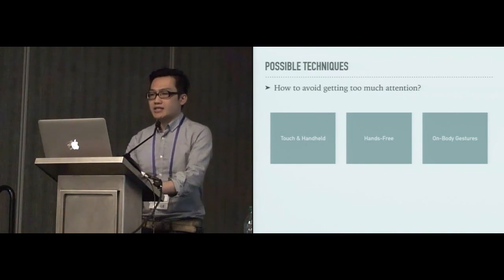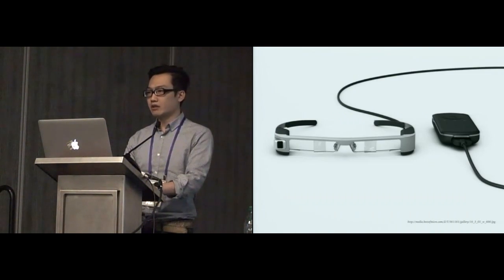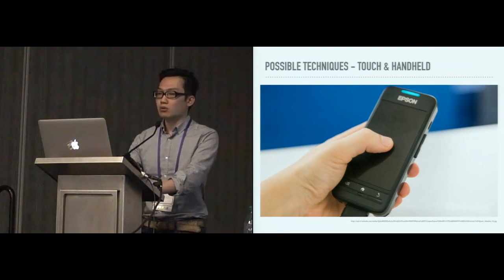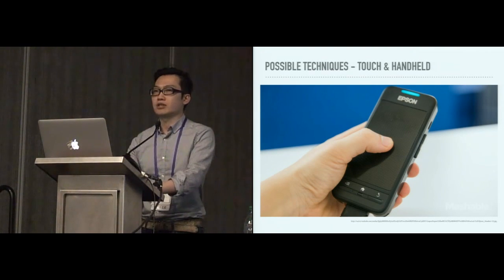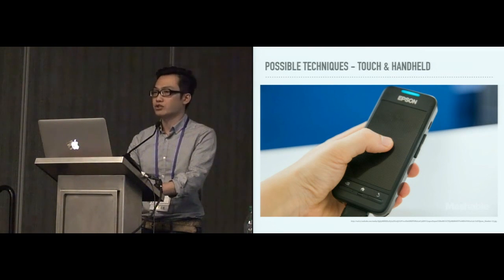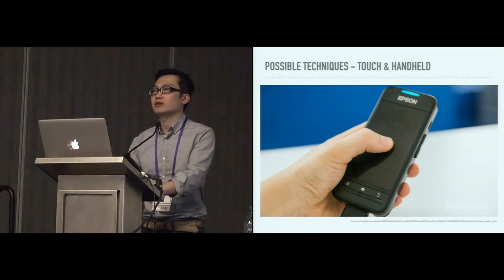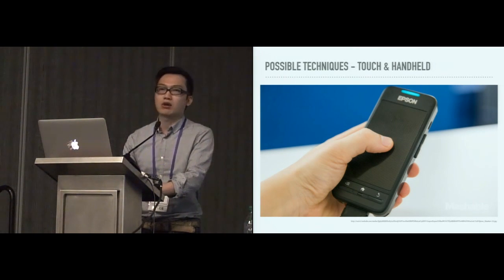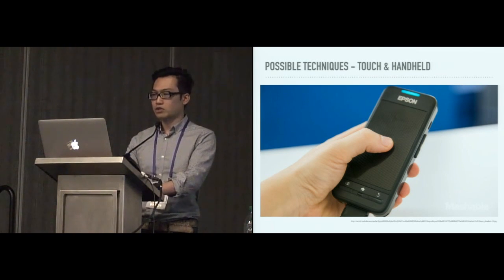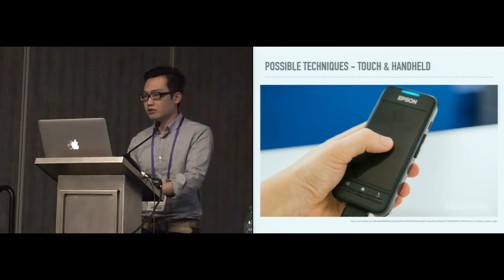So there are several possible techniques that can be categorized in these three types. The first one is touch and handheld. For example, Epson has this handheld design with touchpad interface. This can enable unobtrusive interaction, since you can even use the device with your hand in your pocket, and you can also make very subtle finger gestures. But this design requires the users to hold an additional device in the hand, while high mobility and high degree of freedom should be the major concern in this context. Moreover, direct interaction becomes difficult because the visual contents are no longer touchable.